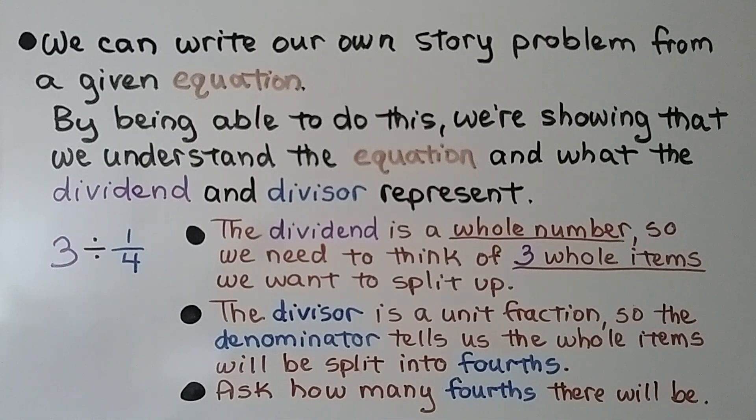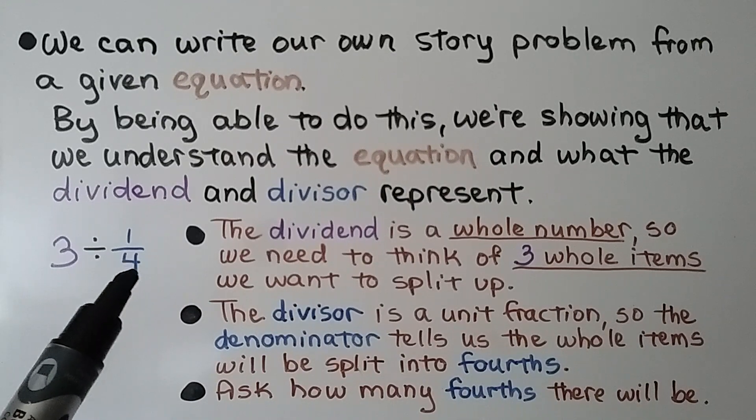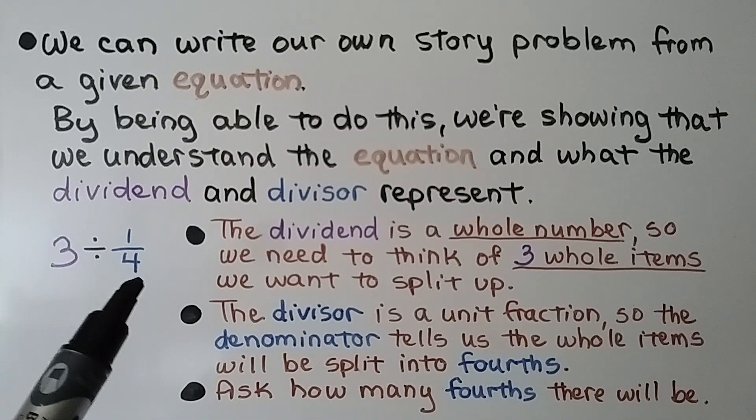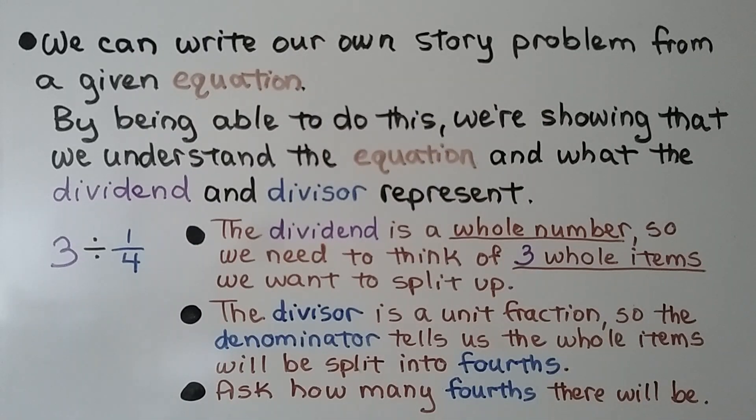We can write our own story problem from a given equation. By being able to do this, we're showing that we understand the equation and what the dividend and divisor represent. If we have 3 divided by 1 fourth, the dividend is a whole number. So we need to think of 3 whole items we want to split up. And the divisor is a unit fraction, so the denominator tells us the whole items will be split into fourths. And we ask how many fourths there will be in our story problem.